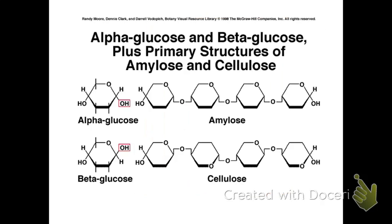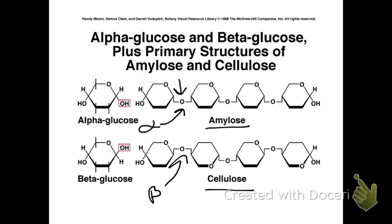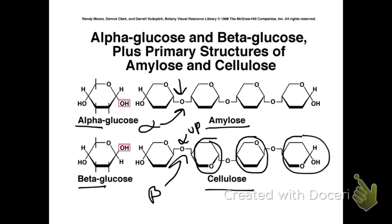Here we have another diagram comparing amylose and cellulose. Amylose is unbranched and in the alpha position — the OH is down. Cellulose is in the beta position — the OH is up. In cellulose, the glucose alternates right side up and upside down, but nevertheless all linkages are beta glycosidic bonds.